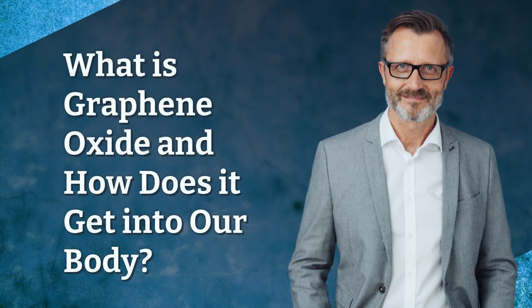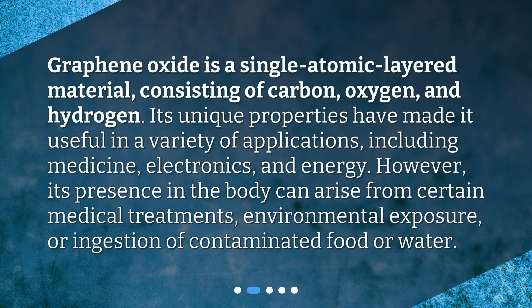What is graphene oxide and how does it get into our body? Graphene oxide is a single atomic-layered material consisting of carbon, oxygen, and hydrogen. Its unique properties have made it useful in a variety of applications including medicine, electronics, and energy. However, its presence in the body can arise from certain medical treatments, environmental exposure, or ingestion of contaminated food or water.